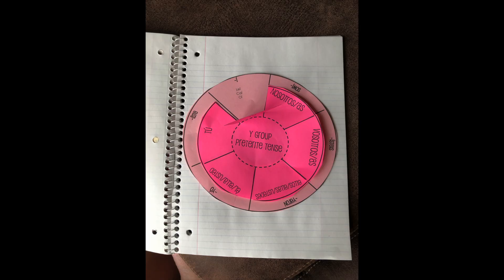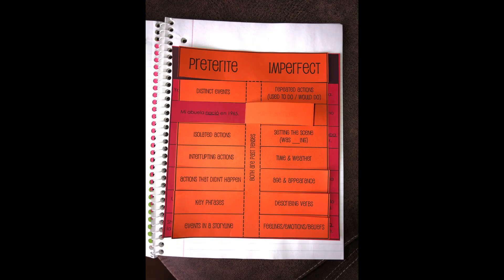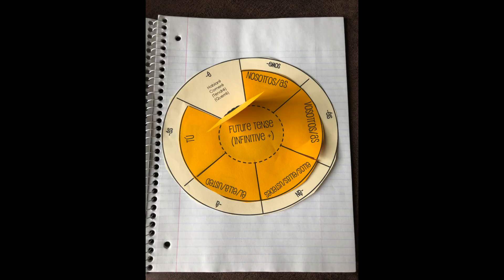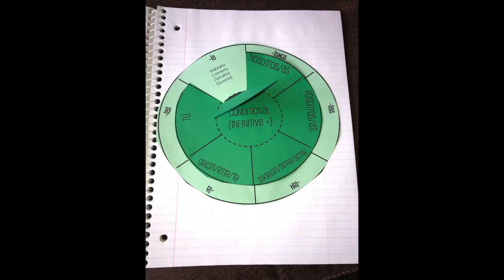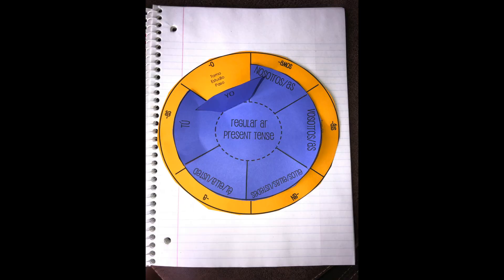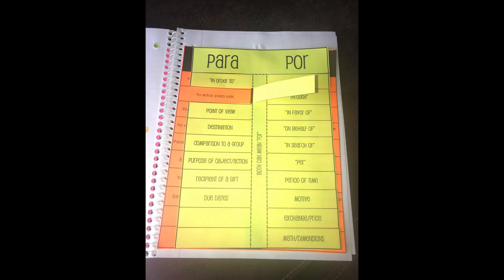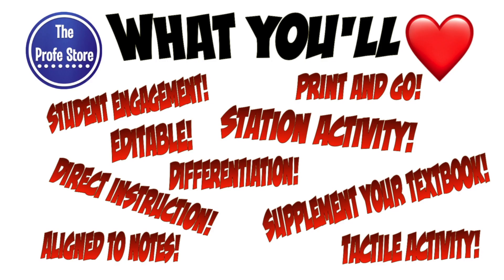I normally make distinctions in two columns, verb groups in wheels, and other grammar skills in a variety of shapes. Here's what I think you're going to love: your students are engaged in the note-taking process. You can print them in color or on white paper.